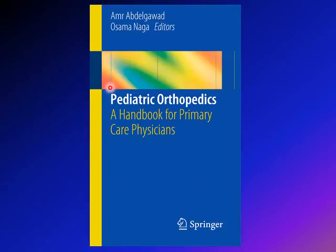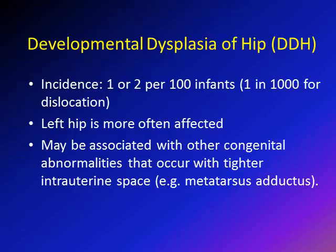A good source to read more about this topic is the book Pediatric Orthopedics: A Handbook for Primary Care Physicians by myself and Dr. Naga. The incidence of DDH is about one to two percent. The incidence of frank dislocation specifically is about one in a thousand. The left hip is always more affected than the right, and this condition may be associated with other congenital anomalies from tight intrauterine space, like metatarsus adductus. DDH is a spectrum ranging from dysplasia — a shallow acetabulum — to frank dislocation, where the femoral head is outside the acetabulum.